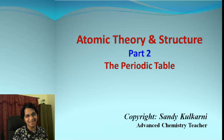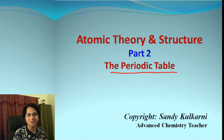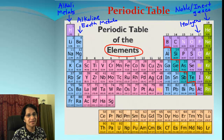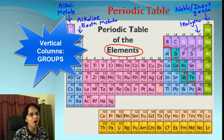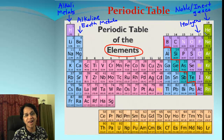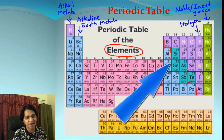Hey kids, Miss Kulkarni here. In this video let's continue with atomic theory and atomic structure, and we are going to focus on the periodic table itself. Here is the periodic table of elements, and as you can see it has got some vertical columns and horizontal rows. The vertical columns are called groups and they are numbered from left to right: 1, 2, 3, 4, and the last one ends with group number 18. The horizontal rows are called periods.